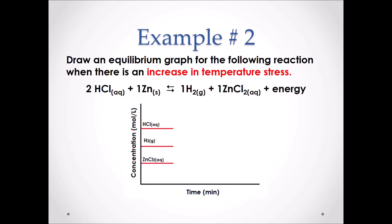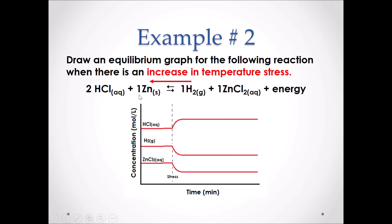Example number two. Draw an equilibrium graph for the following reaction when there is an increase in temperature stress. Energy is represented on the products side of this chemical equation. Therefore, this is an exothermic reaction. If we are adding energy, we are then going to add products and the reaction will again shift to the left. Our equilibrium graph will appear as the following. We are increasing the concentration of the reactants, so HCl will move upwards and flatline. The concentration of both products will decrease downwards and then flatline again.